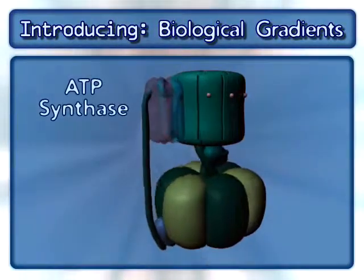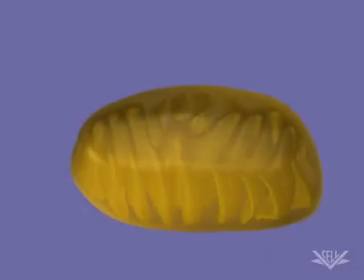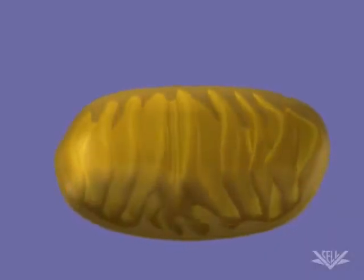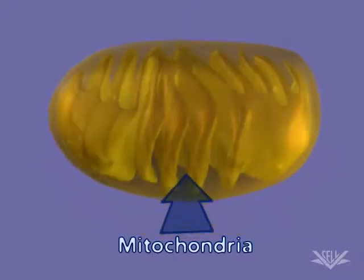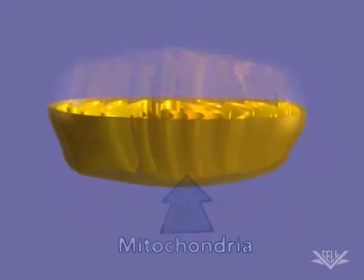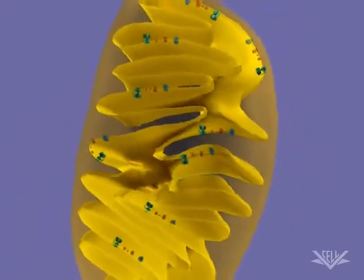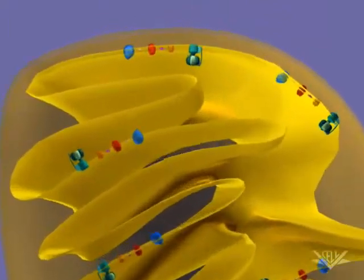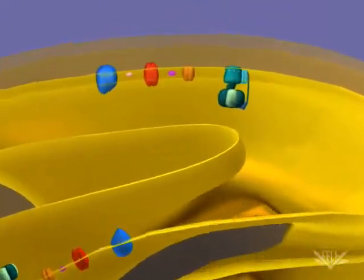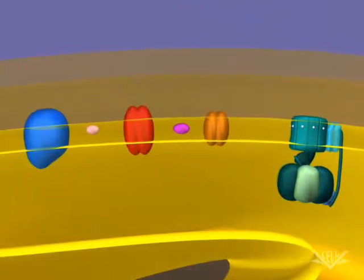This process involves an enzyme complex called ATP synthase. A good example of the use of a gradient occurs in the mitochondria when ATP is synthesized. ATP is synthesized by ATP synthase, a large complex of membrane-bound protein. Here we see ATP synthase, along with other membrane-bound proteins.